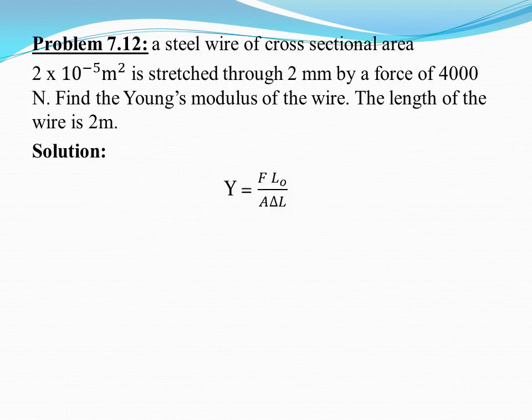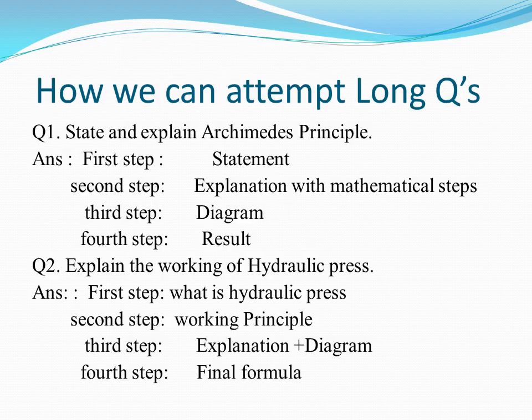Problem 7.12: A steel wire of cross-sectional area 2 × 10⁻⁵ m² is stretched 2 mm by a force of 4000 N. The length of the wire is 2 m. Find the Young's modulus of the wire using the formula Y = FL₀ / (A·ΔL).